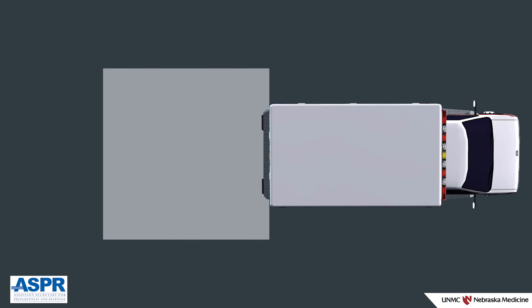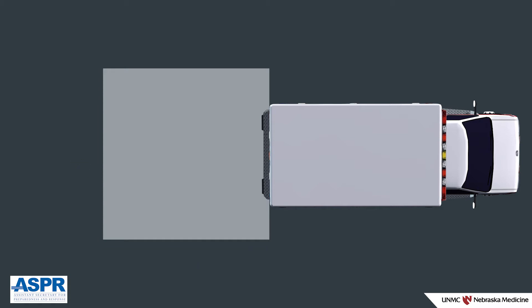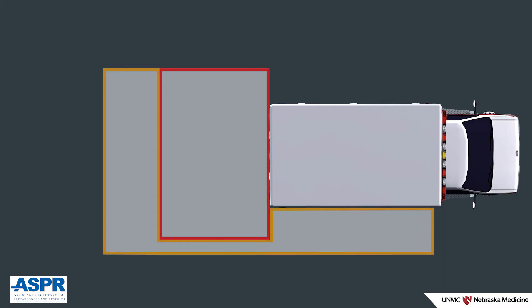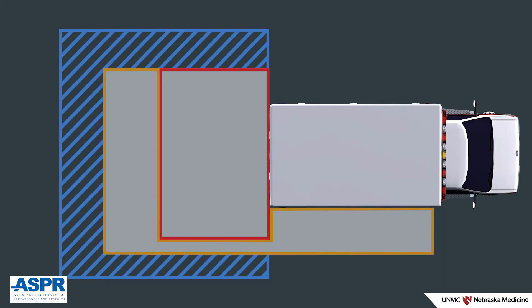Place a sheet of 6 mil plastic, approximately 12 feet by 12 feet, on the ground outside the back of the ambulance at the established work zone. Define and mark the hot, warm and cold zones of contamination around the ambulance — these areas will require PPE to enter. Place biohazard bins lined with biohazard bags next to the outside edge of the plastic sheet.